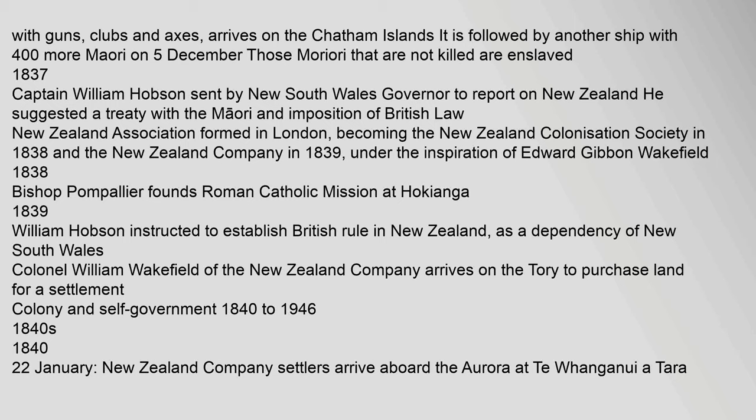19 November: A chartered ship carrying 500 Maori from Ngati Tama and Ngati Mutunga, armed with guns, clubs and axes, arrives on the Chatham Islands. It is followed by another ship with 400 more Maori on 5 December. Those Maori that are not killed are enslaved. 1837: Captain William Hobson sent by the New South Wales Governor to report on New Zealand. He suggested a treaty with the Maori and imposition of British law. New Zealand Association formed in London.